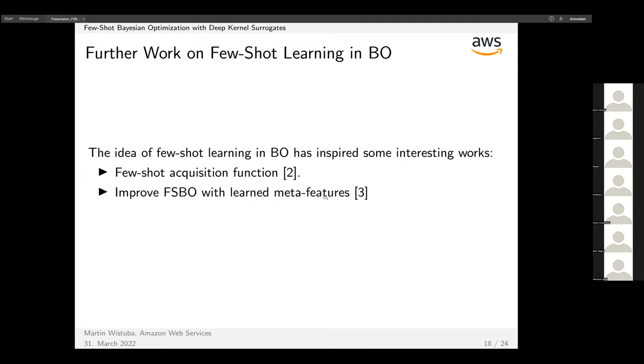I tried to give some further pointers. These are works that also use few-shot learning in Bayesian optimization. There's this recent work one year after ours which applied this idea to the acquisition function instead of the surrogate function—they learned some reinforcement learning policy to recommend new hyperparameters. The second one is a more straightforward extension to our work, where we additionally learn meta-features that represent datasets directly, which also showed promising results.